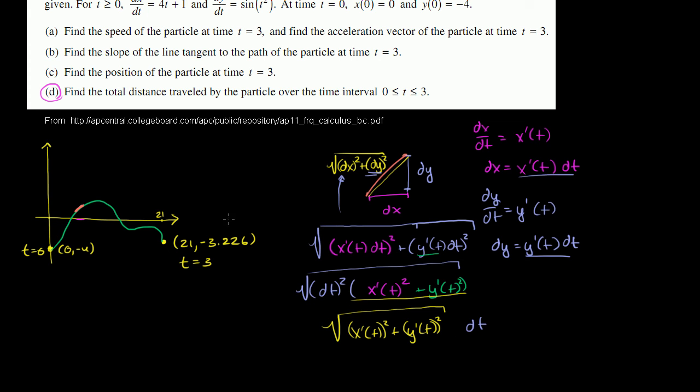This is just a way to derive what this little small arc length is. But we don't want to find just a small arc length, we want to sum over all of them. So we want to integrate from t = 0 to t = 3.